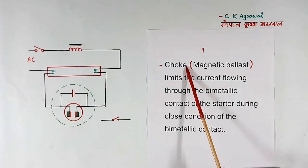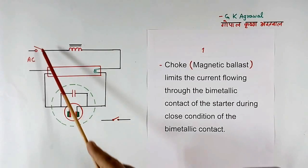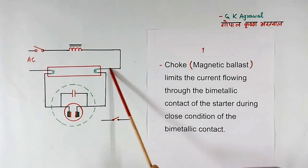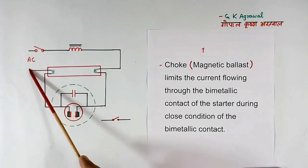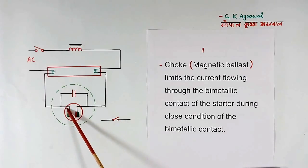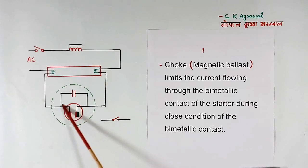First function of choke is to limit the current flowing through the bimetallic contact of the starter. This is starter. This is bimetallic contact. In the beginning, when we close the switch, this bimetallic contact will become hot and will become short. In that case, current flows like this. So this choke is the only item which limits the current flowing in this contact.